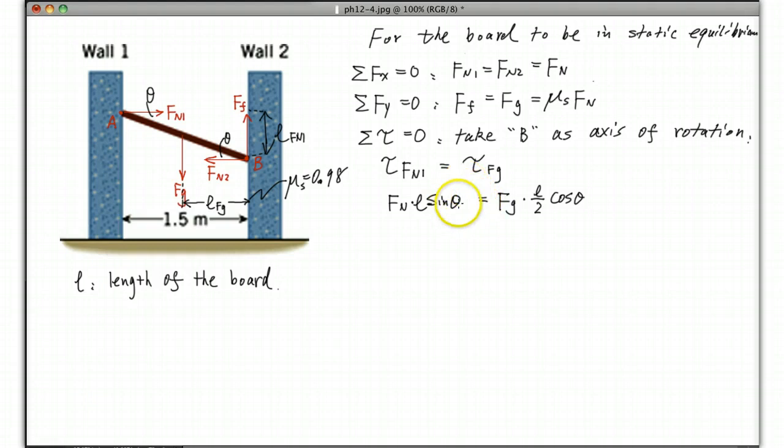From this equation, we can actually solve the angle theta. You can cancel the L. And of course, you need to plug in the Fn and Fg. There is a relation, we can replace the Fg with μs Fn. So plugging this, we get Fn times L sine theta equals μs Fn times L over 2 cos theta.